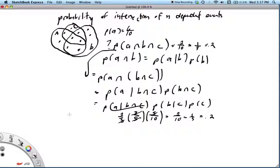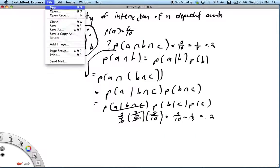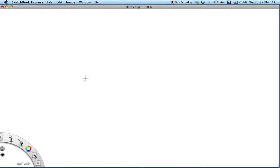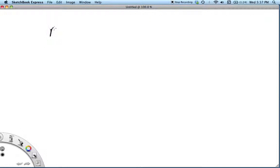Now what about for N events? So now our question is, what is the probability of, and we're just going to, rather than doing the letters A, B, C, we're just going to call it A1 intersect A2 intersect all the way up to intersect An.